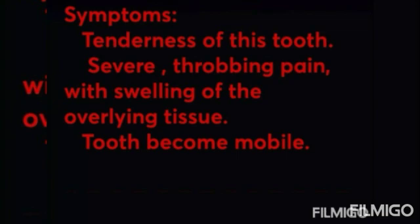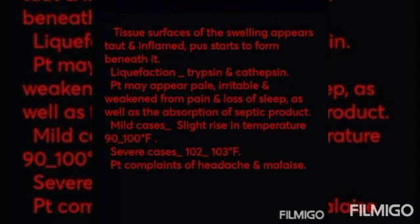Swelling is usually seen in the adjacent tissue close to the affected tooth. When the swelling becomes extensive, the resulting cellulitis may distort the patient's appearance. If untreated, it may progress into cellulitis. The tissue at the surface of the swelling appears taut and inflamed, and pus starts to form beneath it. Such liquefaction is the result of the activity of proteolytic enzymes — trypsin and cathepsin.